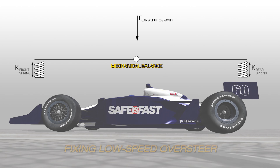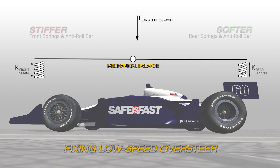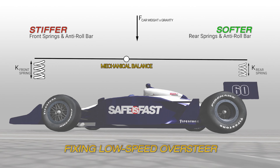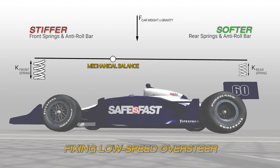Dealing with mechanical oversteer is just the opposite. We're going to move the mechanical balance forward in the car by adding front bar, adding front spring, maybe taking away some rear spring, maybe taking away some rear bar — moving the mechanical balance forward to solve low-speed oversteer.